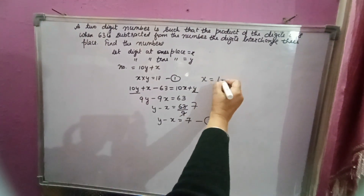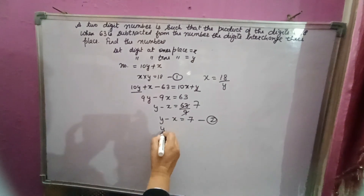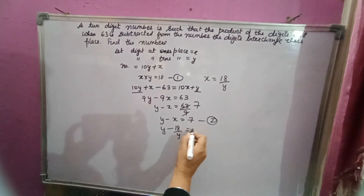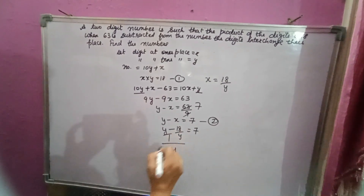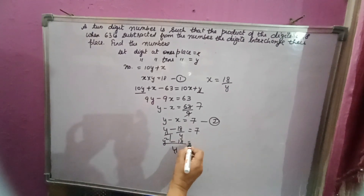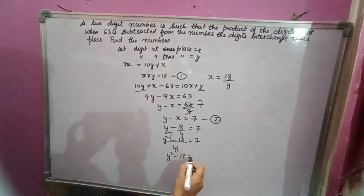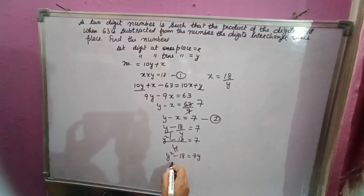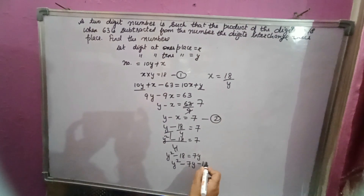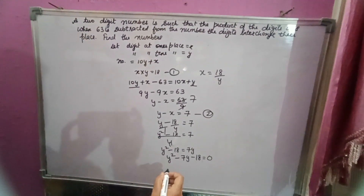Now solve the two equations. From the first equation, x equals 18 over y. Substituting into the second equation: 18 over y minus y equals negative 7, so y squared minus 18 equals 7y, which gives y squared minus 7y minus 18 equals 0. We now have a quadratic equation in y.